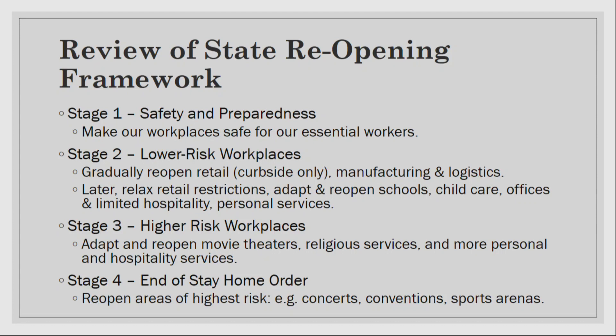Last Friday was a formal recognition from the governor that retail could open widely as long as doing curbside pickup, similar to restaurant guidelines. In stage two, the governor proposed two versions: what's already open, and more relaxed retail restrictions including adapting and reopening schools. The governor mentioned schools opening as early as July, but our local boards of superintendent have made clear they have no intention of reopening schools in July. Stage two also includes child care, limited hospitality, and personal services — appearing to be a long process that won't happen overnight.